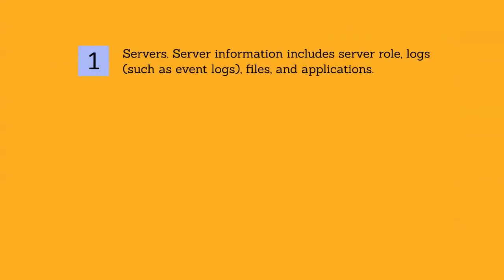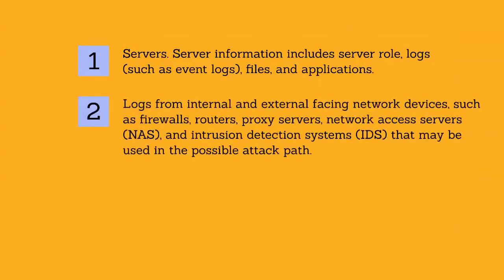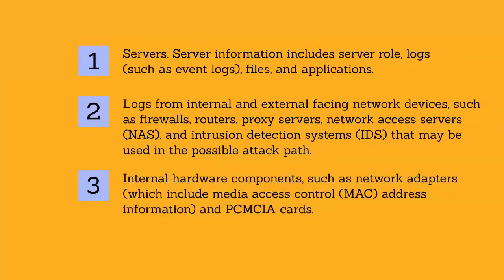Potential data sources include servers — server information includes server role, logs such as event logs, files, and applications. Also consider logs from internal and external facing network devices such as firewalls, routers, proxy servers, network access servers, and intrusion detection systems that may be used in the possible attack path.